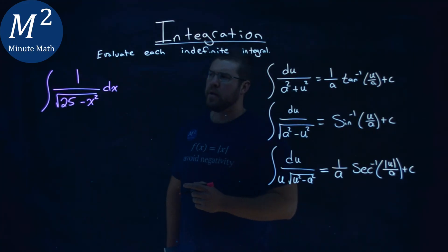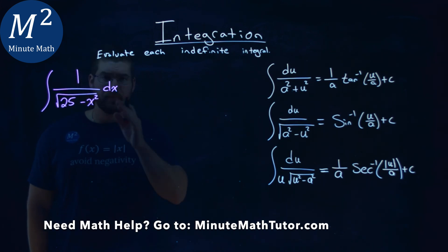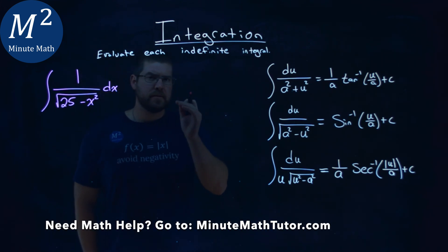We're given this problem right here. The integral of 1 over the square root of 25 minus x squared dx, and we have to evaluate this indefinite integral.